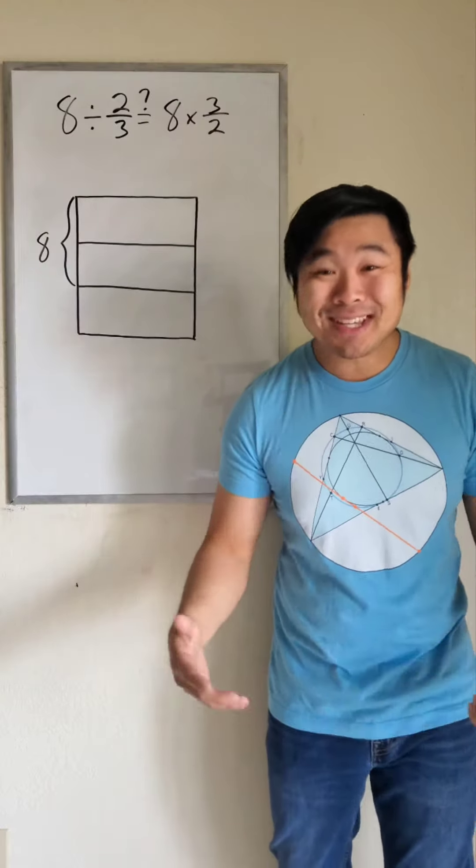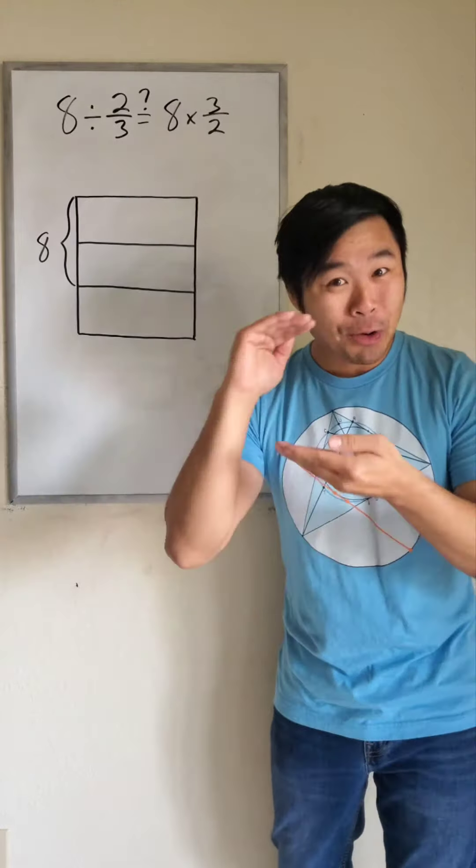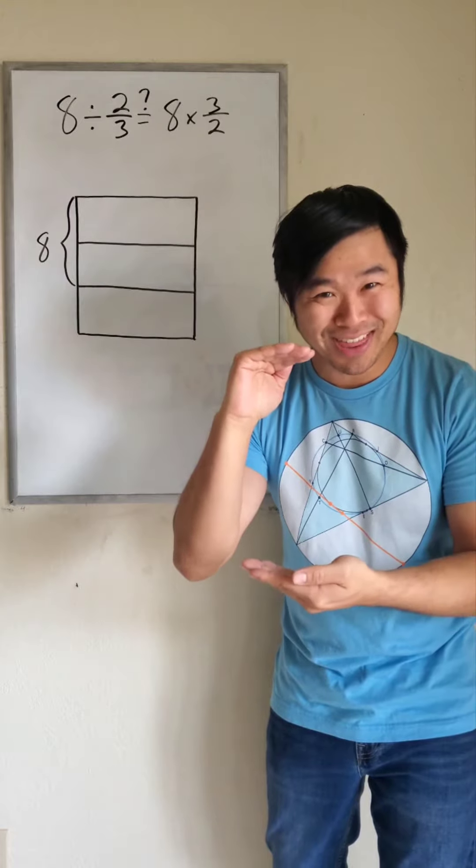One of the division models is called the partitive model, where you know part of a whole and you need to figure out what the whole is worth.